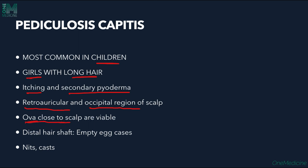The ova are found very close to the scalp. The distal hair shaft will contain empty egg cases. Nits and casts need to be differentiated. Casts are the remnants of the inner root sheath. A cast can be moved along the hair shaft, whereas nits are fixed to the hair shaft — that is how we differentiate them.